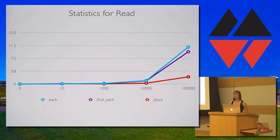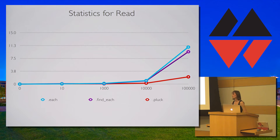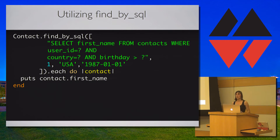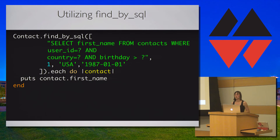On the y-axis we have the number of seconds, and the x-axis represents the number of records. For 100,000 records, each in blue takes almost 11 seconds, find_each in purple takes 9.3 seconds, and pluck in red is the fastest at 2.11 seconds. Another useful method ActiveRecord provides is find_by_sql, which allows us to craft custom SQL queries. At times this may be faster and more efficient because ActiveRecord doesn't always know the best way to get the data we're looking for.